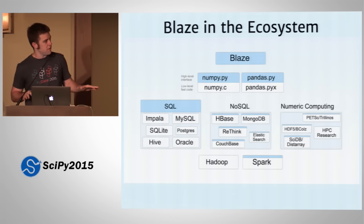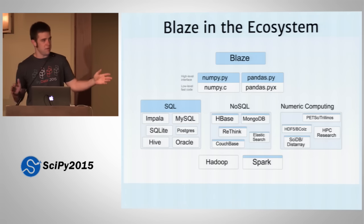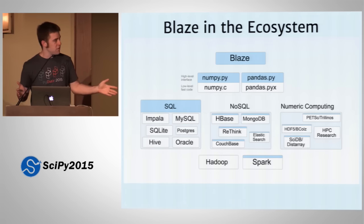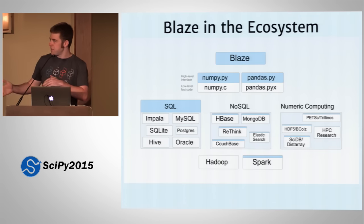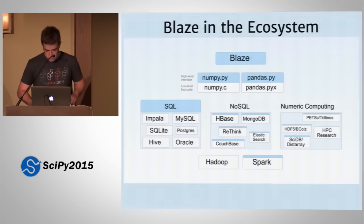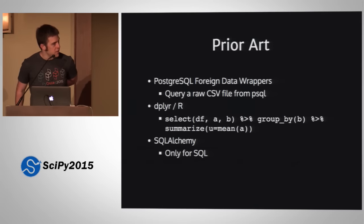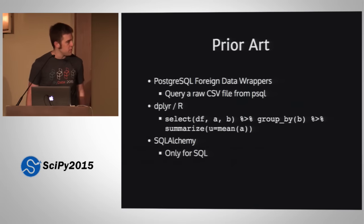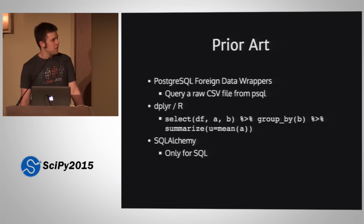Blaze is just an interface. It doesn't implement any low-level fast code — it tells other systems what to do. Blaze is not the first of its kind; there are a couple of systems and libraries that do things similar to Blaze.